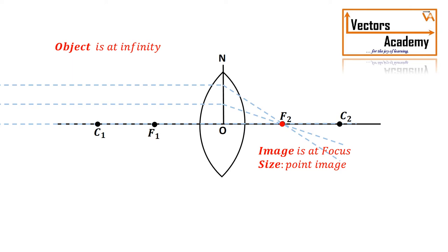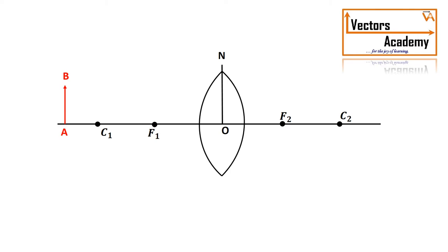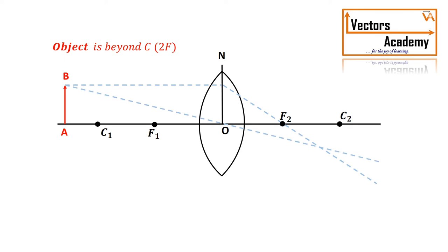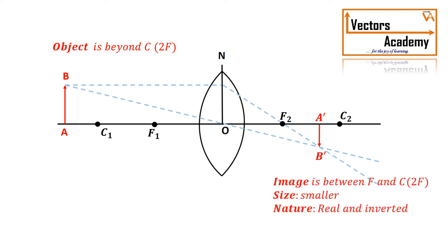If the object is closer to the lens but beyond c — beyond the center of curvature — the rays parallel to the principal axis will pass through the focus, and the rays which pass through the optical center will go without any refraction. The image formed will be between f2 and c2, that is between the focal length and the center of curvature. The image will be inverted and diminished.